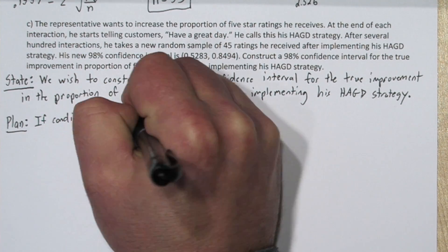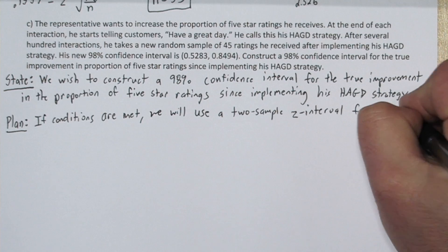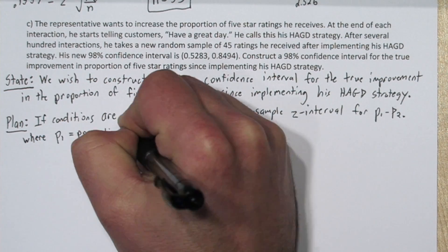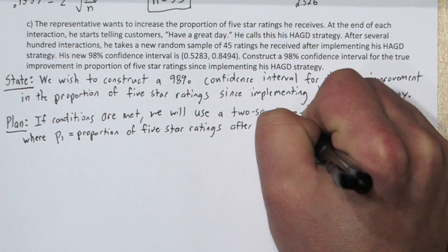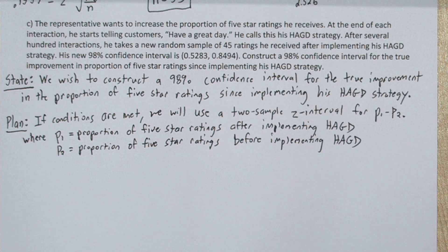For the plan step, if conditions are met, we will use a 2 sample z interval for the difference in population proportion. In this case, the proportion of 5 star ratings he had after implementing his strategy and the proportion he had before implementing it. The reason I chose proportion 1 to be after implementing have a great day is because it's greater, and when we do the subtraction we'll be left with a positive difference. That will be easier to interpret.